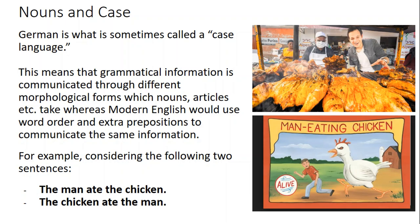The form of the noun and article will change in German depending on the role it plays within the sentence. In English, this is largely deduced from word order. For example, 'the man ate the chicken' and 'the chicken ate the man' mean two radically different things. The first refers to someone eating delicious grilled chicken; the second refers to a very scary monster — a chicken large enough to eat a man. But the morphological forms of the nouns themselves do not change in English. We only know which is the subject and which is the object because of the position before or after the verb.